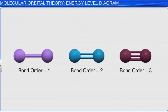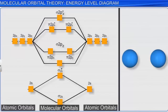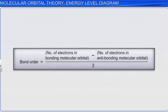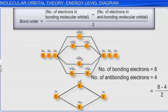The number of bonds between a pair of atoms is called the bond order. In terms of molecular orbitals, bond order is calculated as the number of electrons in bonding molecular orbitals minus the number of electrons in antibonding molecular orbitals, divided by two. In oxygen, the number of electrons in bonding orbitals is 8 and in antibonding orbitals is 4, giving a bond order of (8 − 4) / 2 = 2.